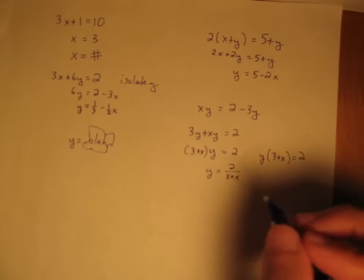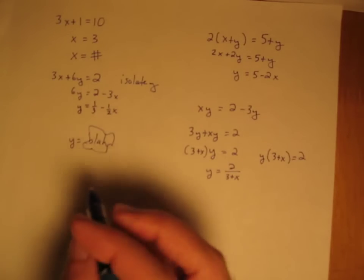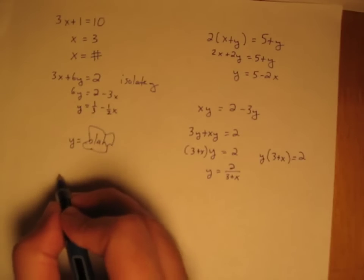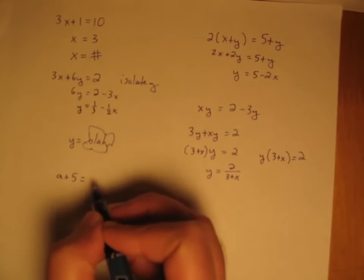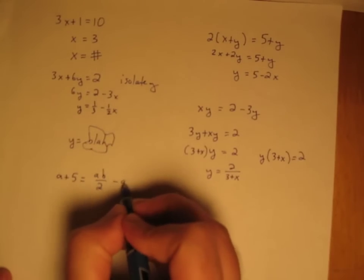Now having two variables, there's nothing special about that. We can have as many as we want, with the key thought being we find the one of them that we want to isolate and bring it all to one side and simplify and untangle. So one last example, we'll have a plus 5 equals ab over 2 minus ac.